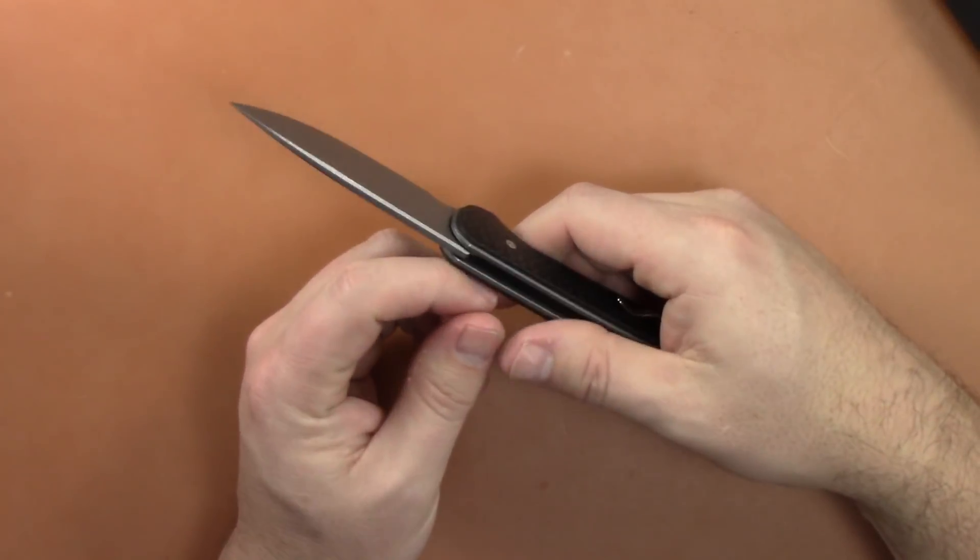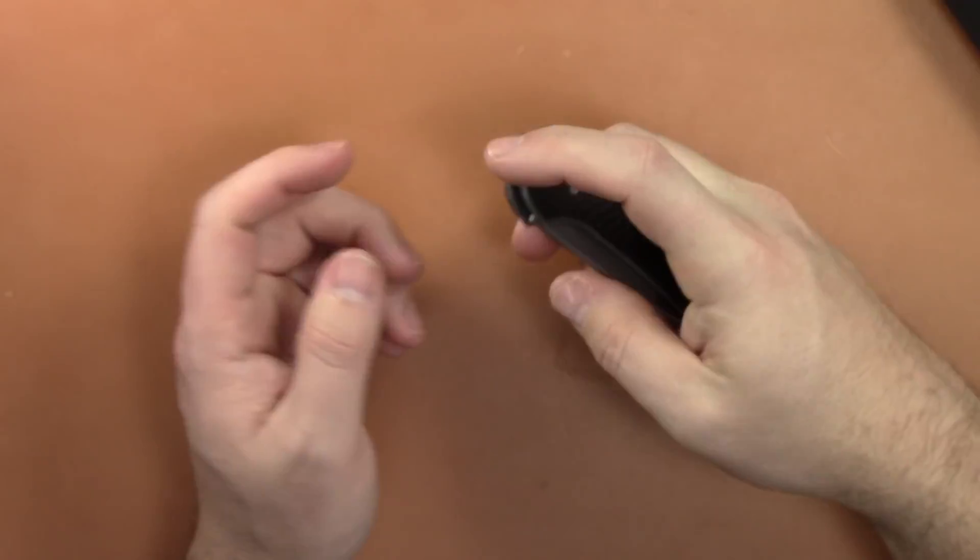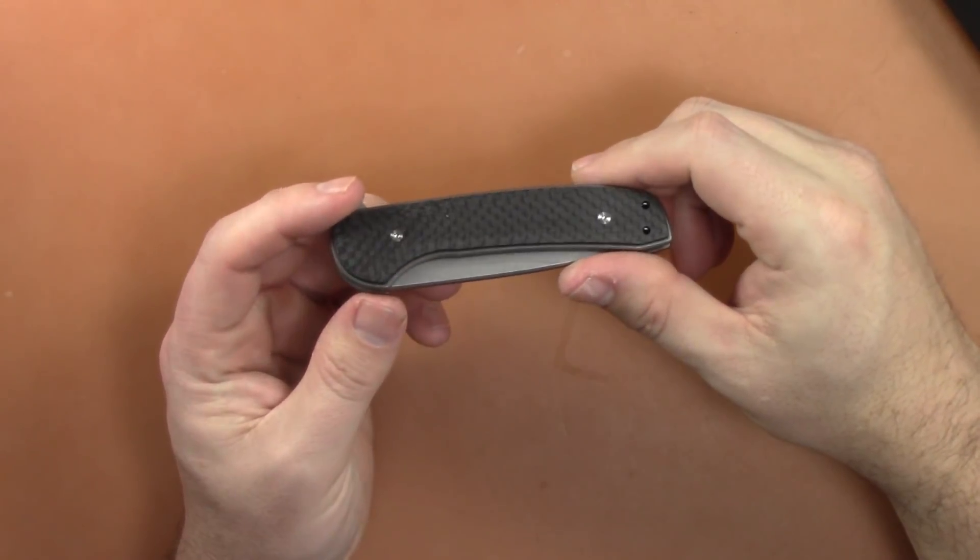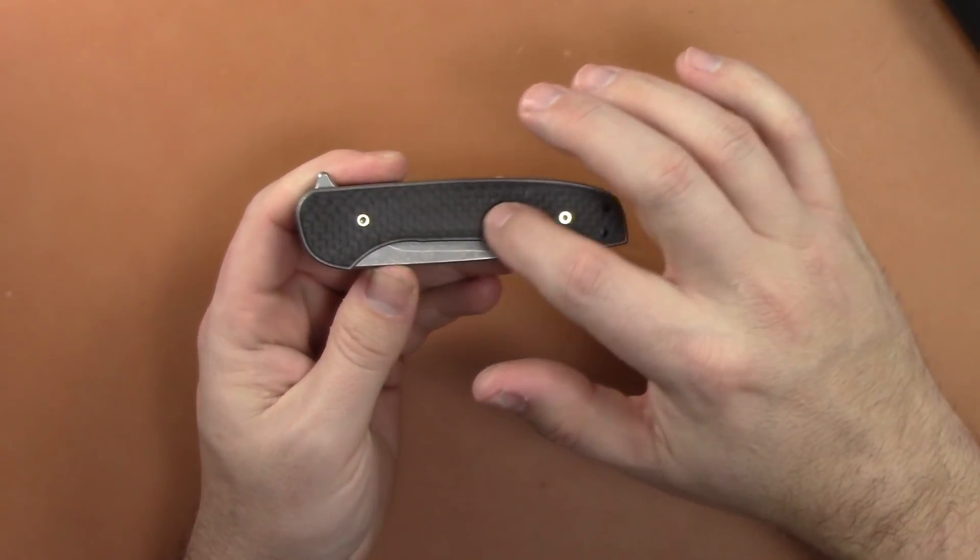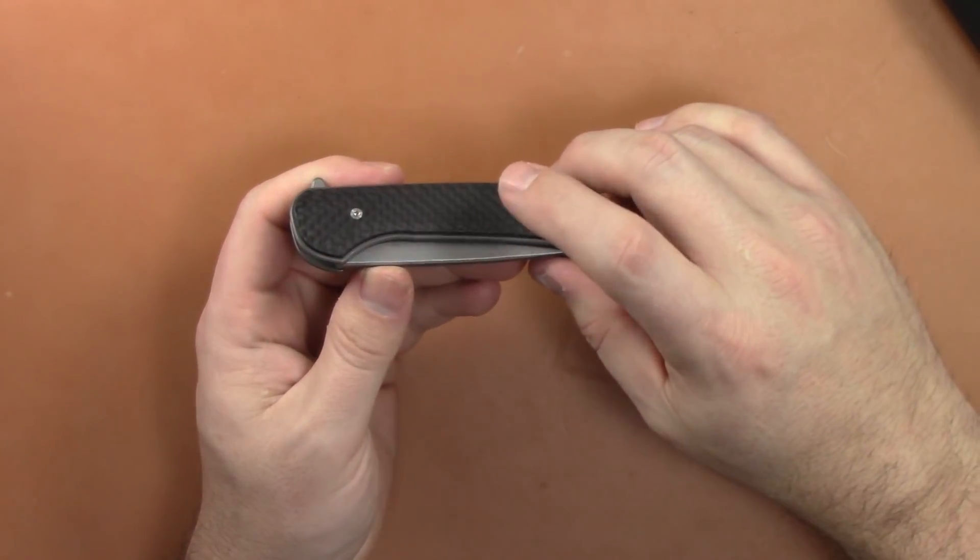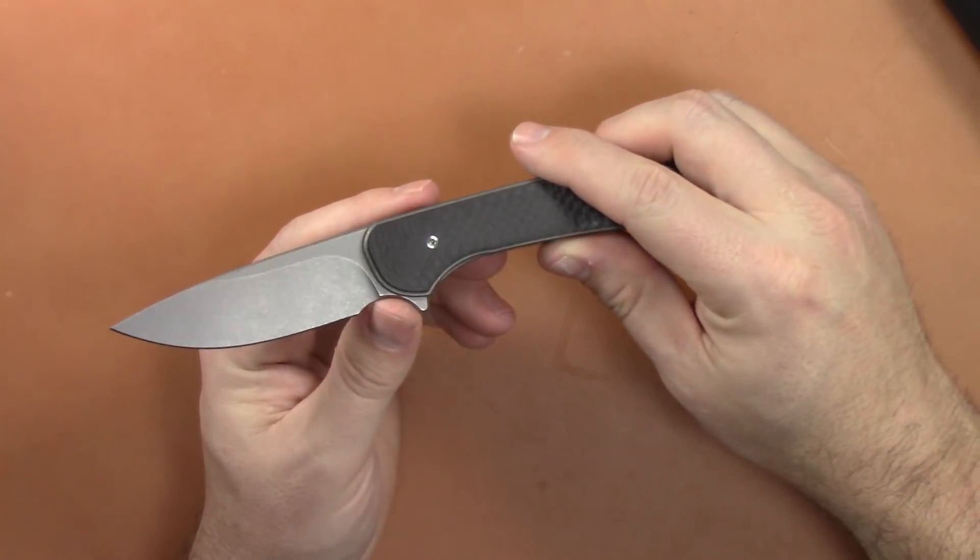For 79 bucks - S35VN, titanium, and G10 for 79 bucks! This version here in the rosewood handle is 99 bucks. Carbon fiber or rosewood, same steel, a little bit different finish on the blade - more of a heavy stonewash.